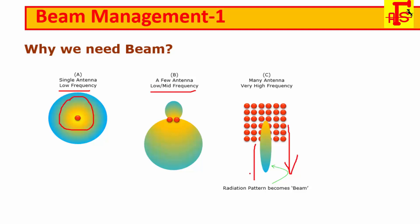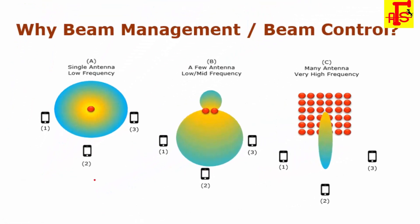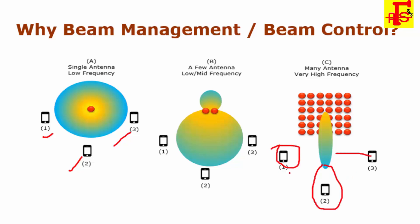High beam management and high beam control is required. As you can see in figures a and b, in the case of low and mid range frequency, without using a massive antenna array, a single transmission would cover a lot of UEs simultaneously. However, when the radiation becomes a beam shape as in figure c, it is very difficult to cover multiple UEs in a single transmission unless those multiple UEs are located very close together.